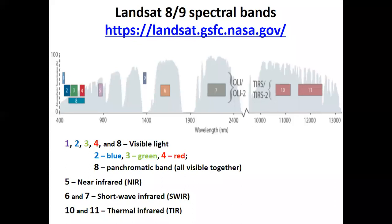All those rectangles shown represent what are called spectral bands — the spectrum of electromagnetic waves detected by a particular sensor.